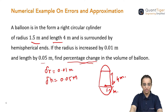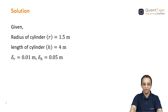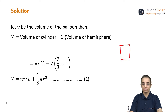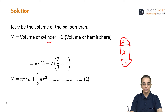Let us go with the solution. Here I put all the given quantities: the radius of the cylinder, the height or length of the cylinder, and the changes delta r and delta h. After this, we find the volume of the balloon. We know the volume of a cylinder is pi r squared h, but here the ends are hemispheres, so we must add the volume of the hemispheres as well.